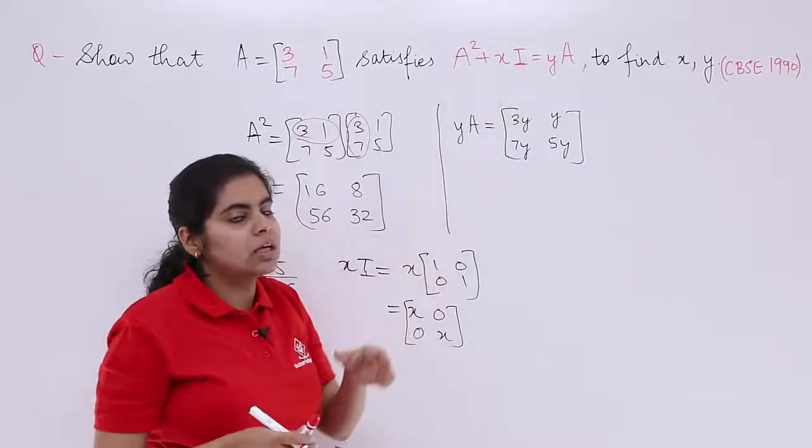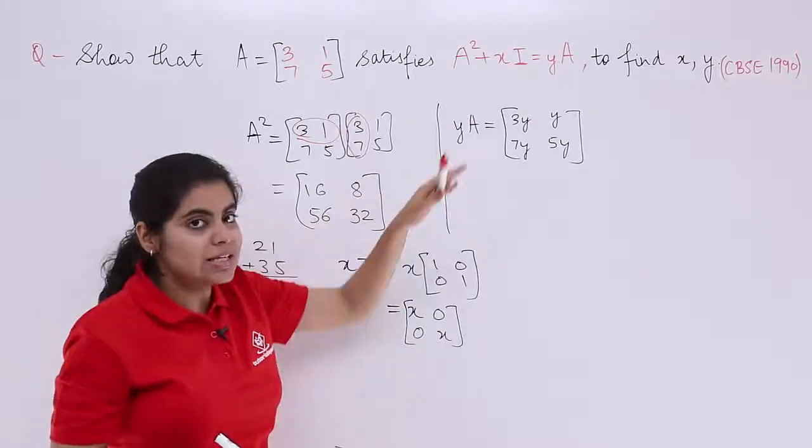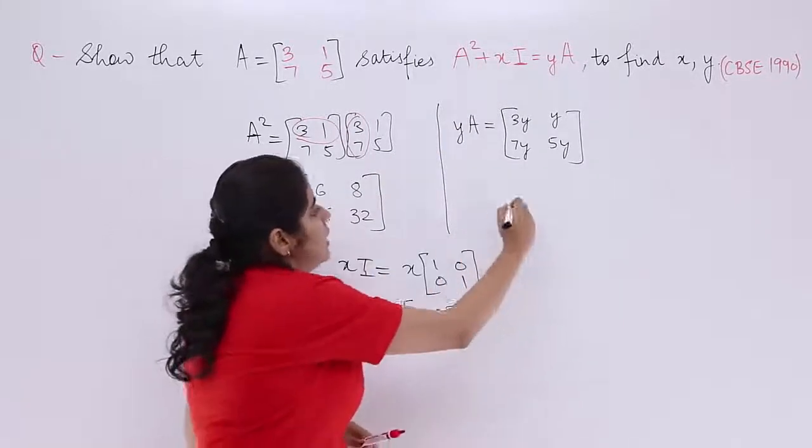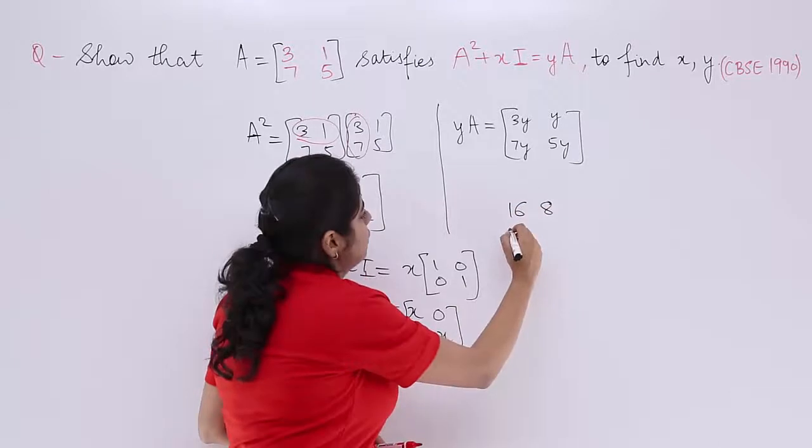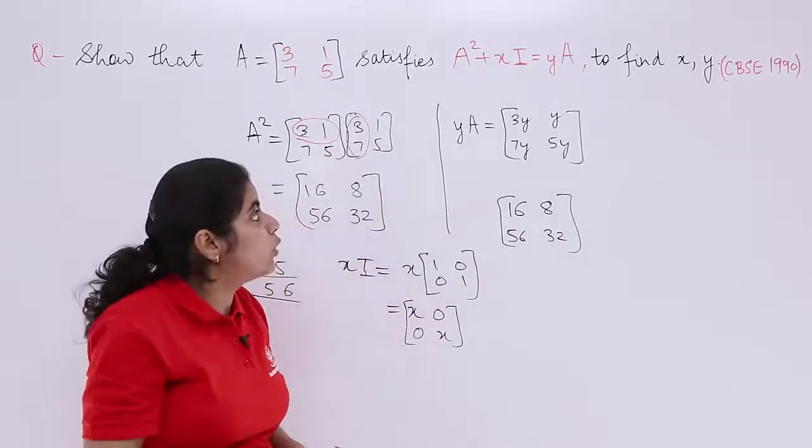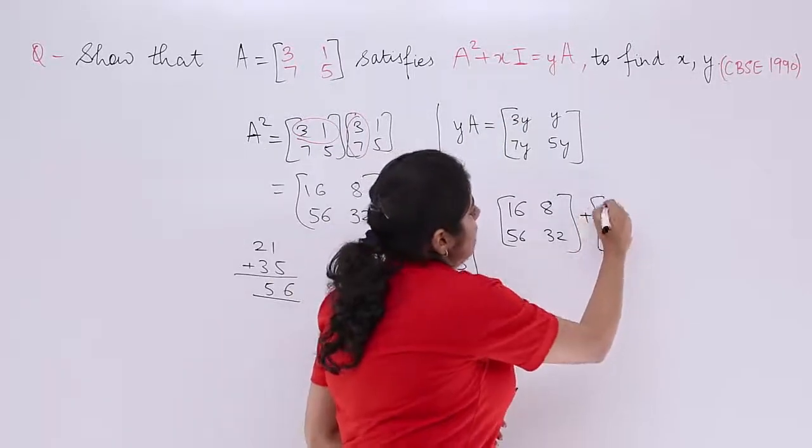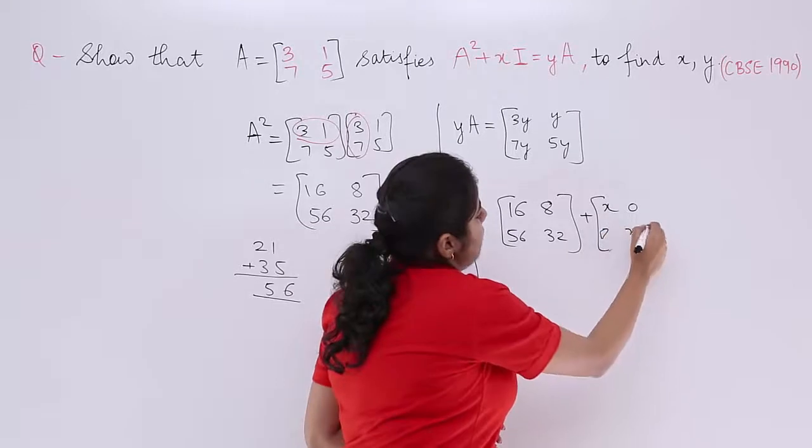When you have been doing all this, the only task is to put these values in the equation. Equation says A square. Where is your A square? It is 16, 8, 56, 32. Then what you have is plus XI. Where is XI? X 0 0 X. So it is plus X 0 0 X.